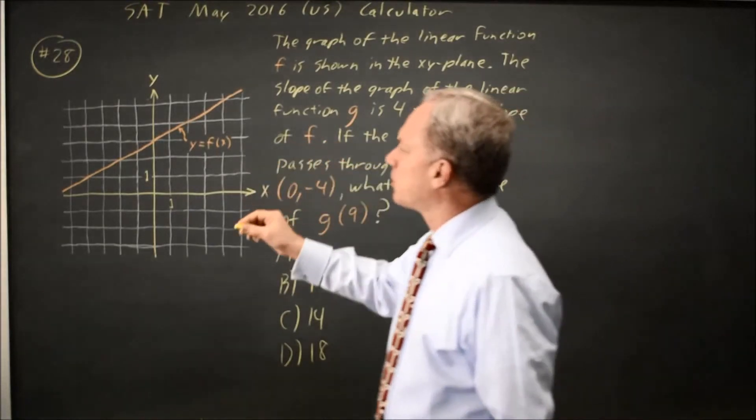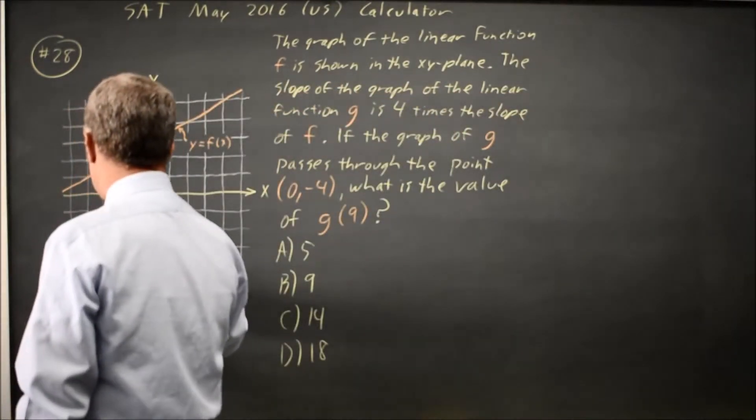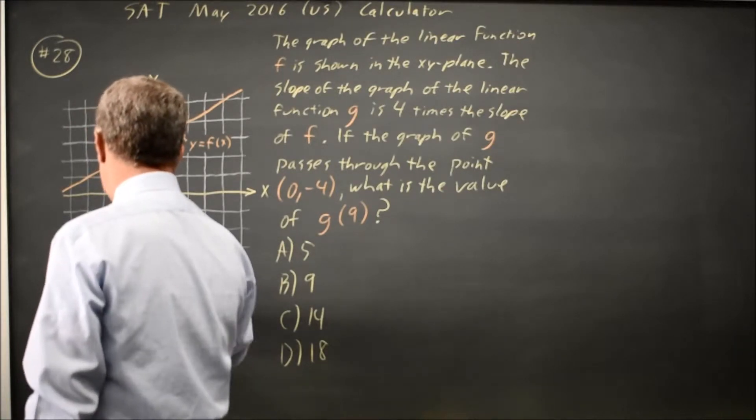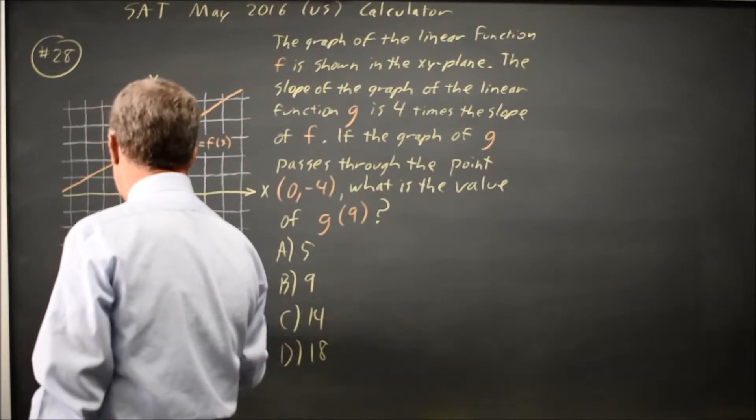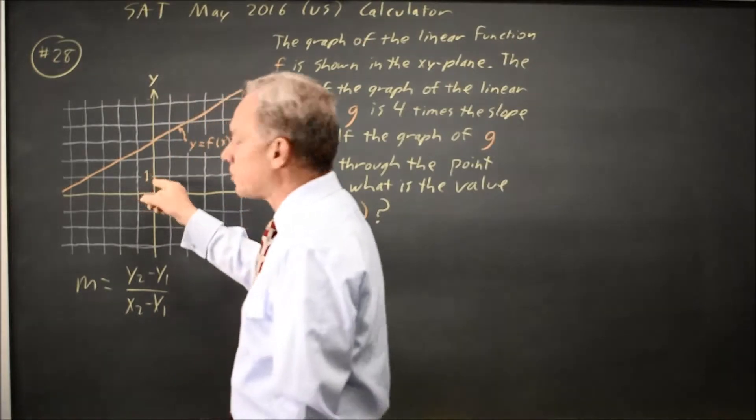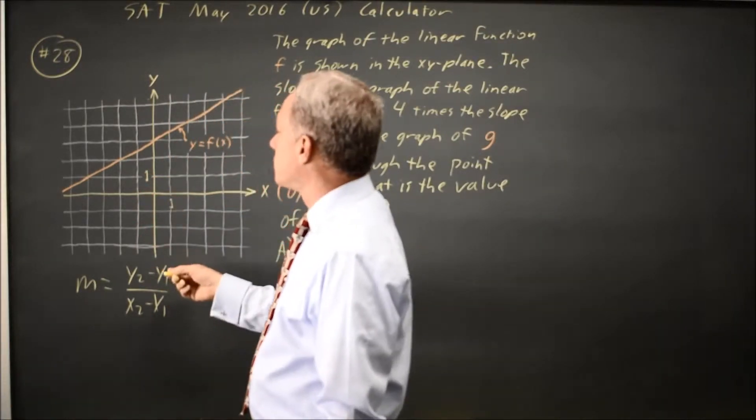So let's find the slope of this line. The slope is y2 minus y1 over x2 minus x1. And I notice my vertical and horizontal scales are equal. Each square is 1.